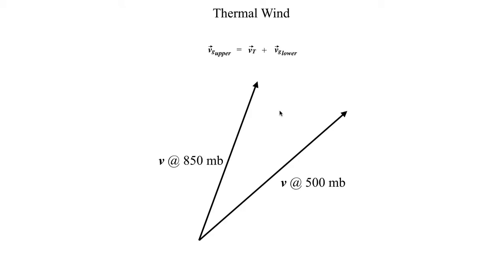So let's take a look at an example of when we might apply that. Here I've got a geostrophic wind at 850 millibars represented by this line, and I have a geostrophic wind vector at 500 millibars represented by this line. If we have a vector addition, that's relatively straightforward — we just simply take the tail of one vector and attach it to the tip of the other vector. Here I have the geostrophic wind at a lower level, and then we're adding that to our thermal wind vector.